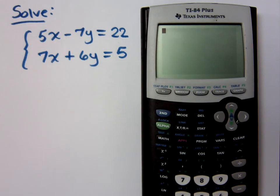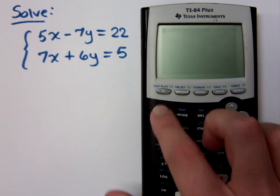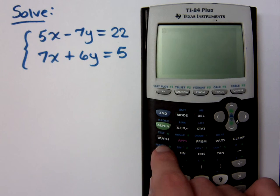All right, so I want us to take this system. I want you to convert it to a matrix and find the reduced row echelon form, which will give you the solutions.